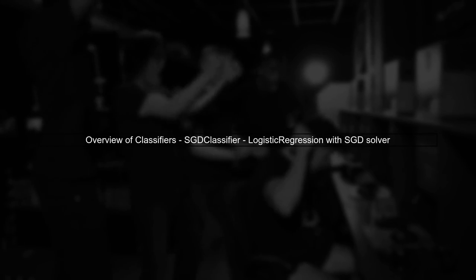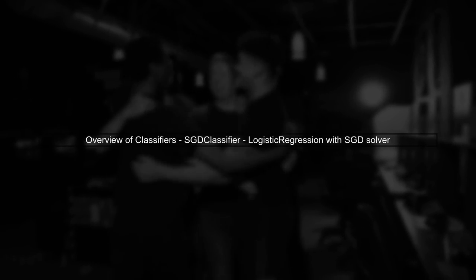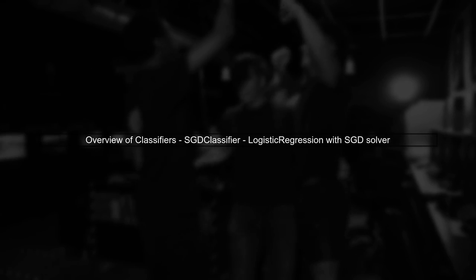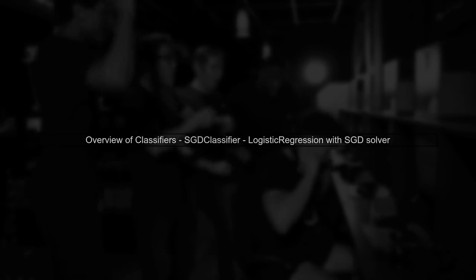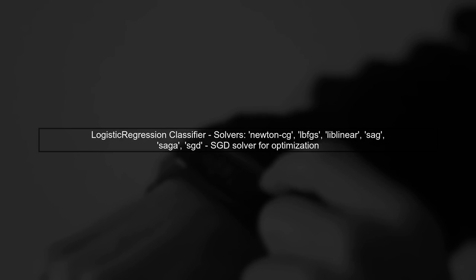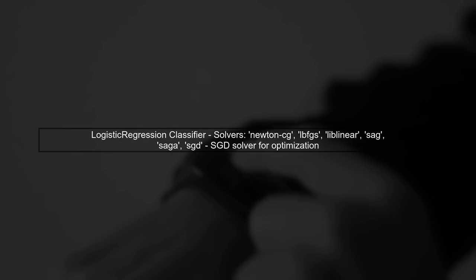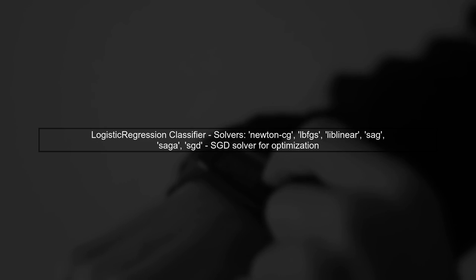Let's start by understanding the two classifiers in scikit-learn: SGDClassifier and logistic regression with the SGD solver. The logistic regression classifier can use different solvers, including stochastic gradient descent or SGD. This allows for flexibility and optimization.